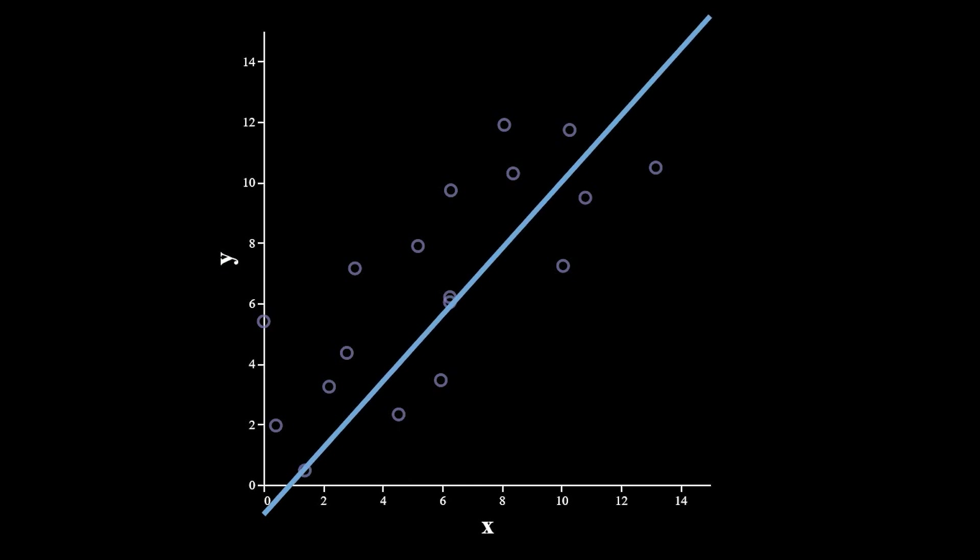In this case specifically, that means our model is a line. Any line. So it could be this, this, or this. You get it. But now, the question becomes, of all possible lines, which one makes for the best guess of the function that produced this data?